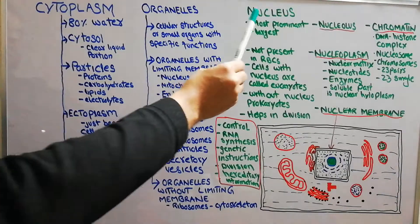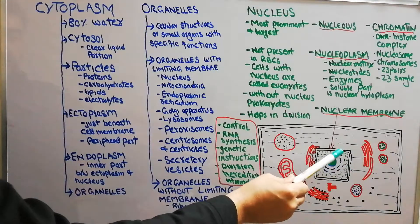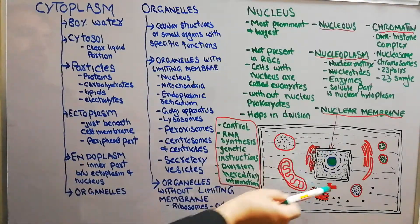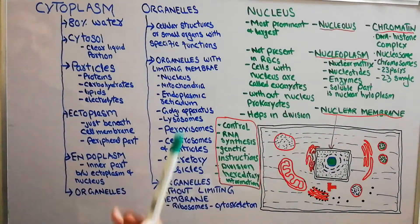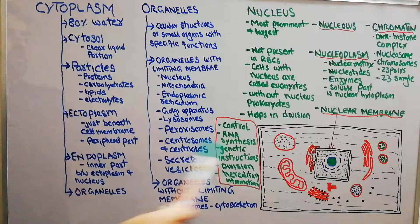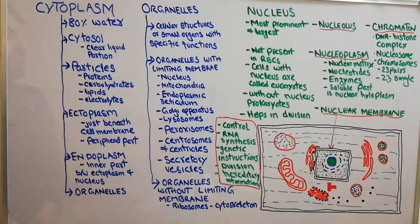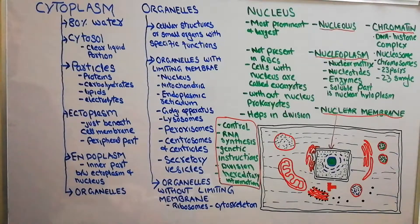The nucleus is the largest cell organelle within the cell or cytoplasm, occupying about 10% of the cell volume. It is the most prominent and largest cell organelle. The nucleus is present in all cells of the human body except red blood cells. Some cells are uni-nucleated, having one nucleus, while some cells may have more than one nucleus and are known as multi-nucleated cells.